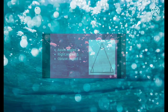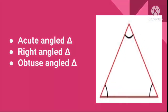Question number 7: Again, a figure is given to you — try to identify it. Is it an acute angled triangle, a right angled triangle, or an obtuse angled triangle? Look at the angles carefully and then identify this triangle.